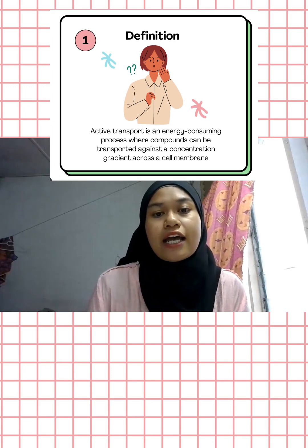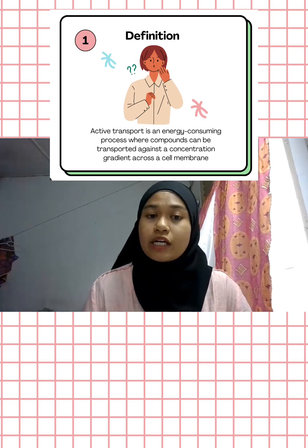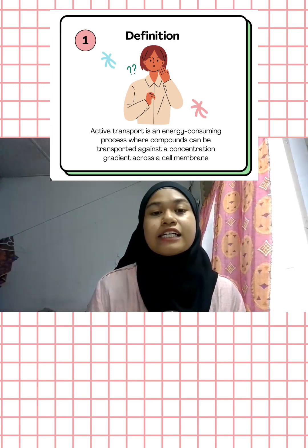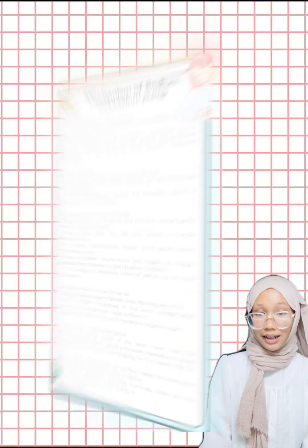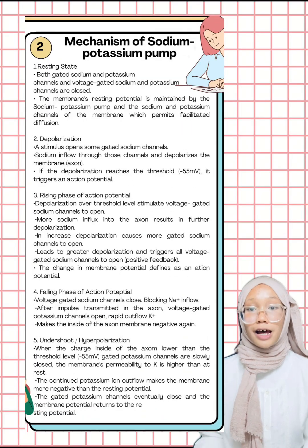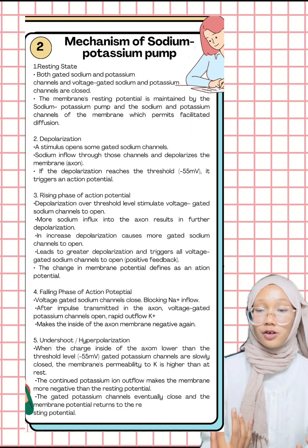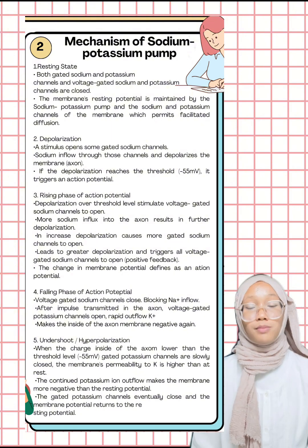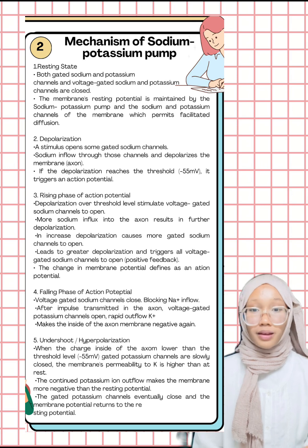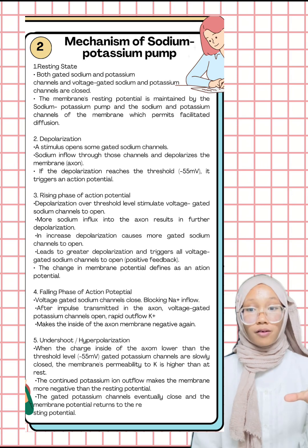What is the definition of active transport? Active transport is an energy-consuming process where compounds are transported against the concentration gradient across the membrane. Carrier proteins are used to move materials against the concentration gradient — these proteins are known as pumps. One mechanism example is the sodium-potassium pump, and this mechanism has five phases.